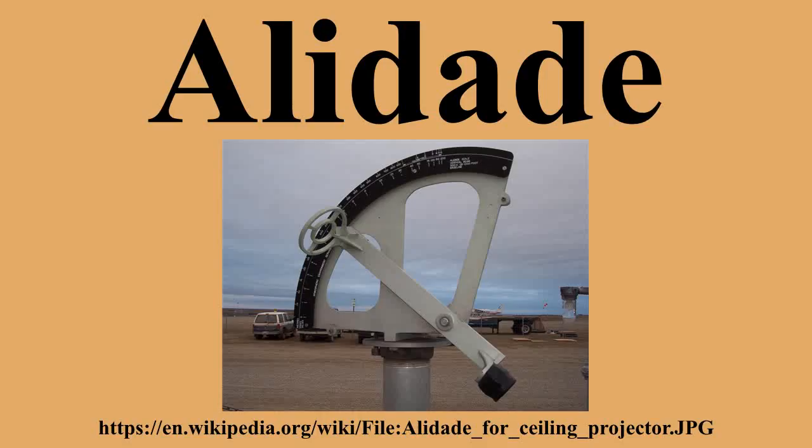The openings would be smaller in a real alidade, perhaps 2 mm or so in width. One can look through the openings and line them up with the object of interest in the distance. With a small opening, the error in sighting the object is small. However, if a dim object such as a star is observed through a small hole, the image is difficult to see. This form is shown in the diagram as having pointers, which can be used to read off an angle on a scale engraved around the outer edge of the instrument. Alidades of this form are found on astrolabes, mariners' astrolabes, and similar instruments.